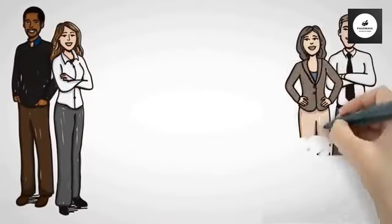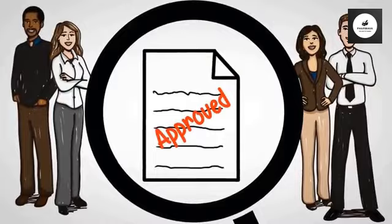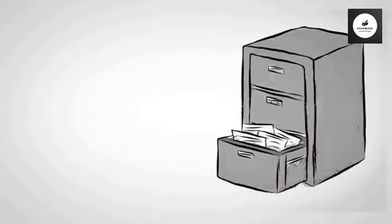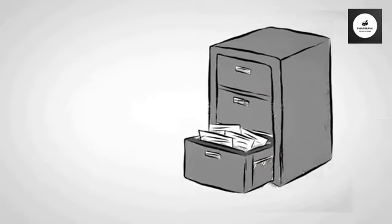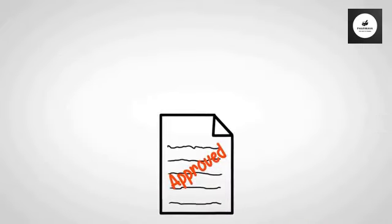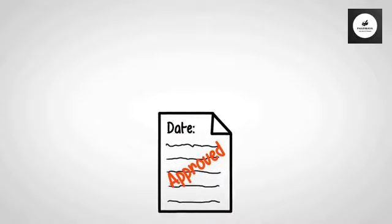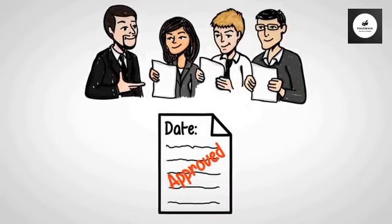Ensure that key stakeholders are part of the review and approval process. Follow your internal process to get the document signed off and archived. After your document is signed off, ensure that it has an effective date and is circulated to the stakeholders.